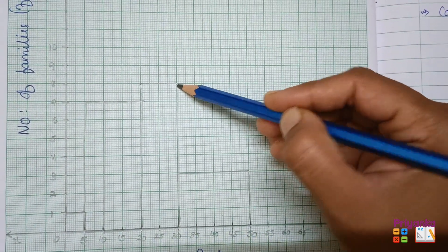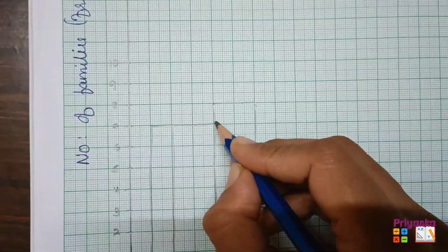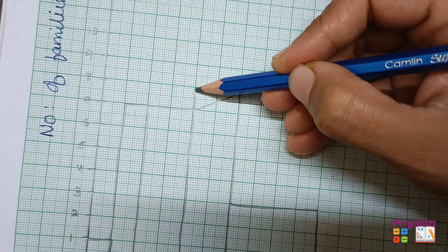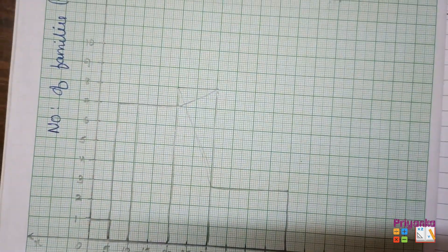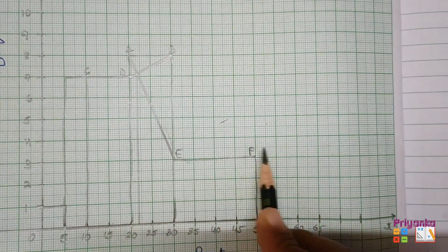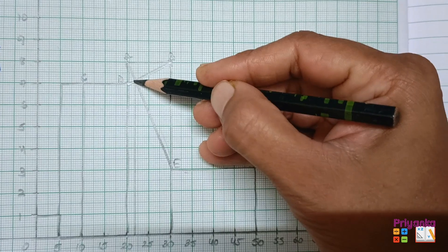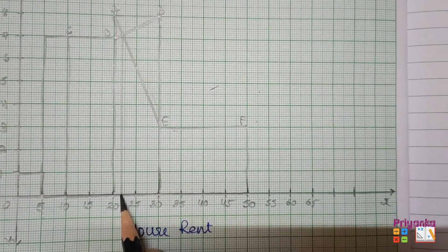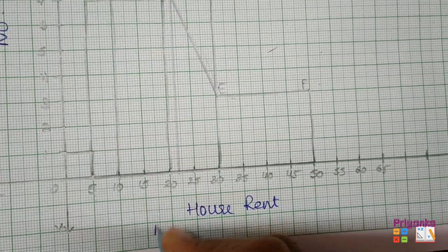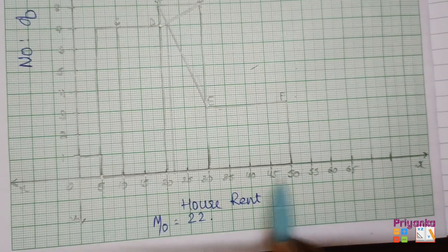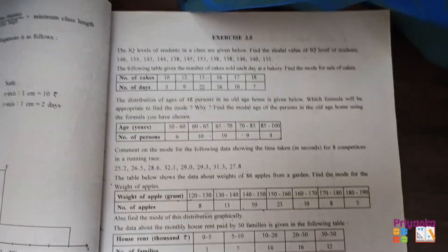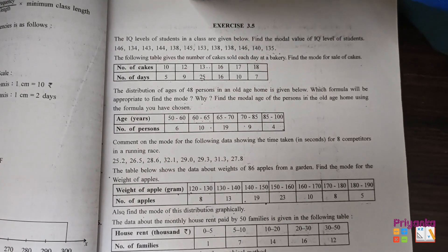Now join the topmost bar of the modal class (20–30) diagonally to adjacent bars, making a cross. Label the points A, B, C, D and E, F. Drop a perpendicular from the intersection to the x-axis. We can see it falls at approximately 22, and since rent is in thousands, the mode equals 22,000. This completes Exercise 3.5 — we will continue with Section C of Exercise 3.